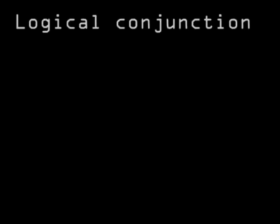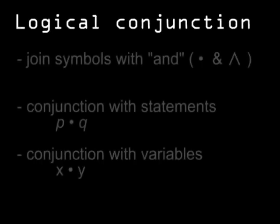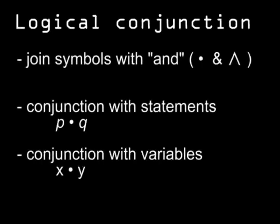Let's build our sentences out a bit more. To do that, let's start with the logical connectives AND and OR. We can join two symbols with AND. The conjunction can come between two statements like 'she saw Bob and the house is red,' or 'this is a fish and fish can swim.' The conjunction might also come between two variables, like x and y.